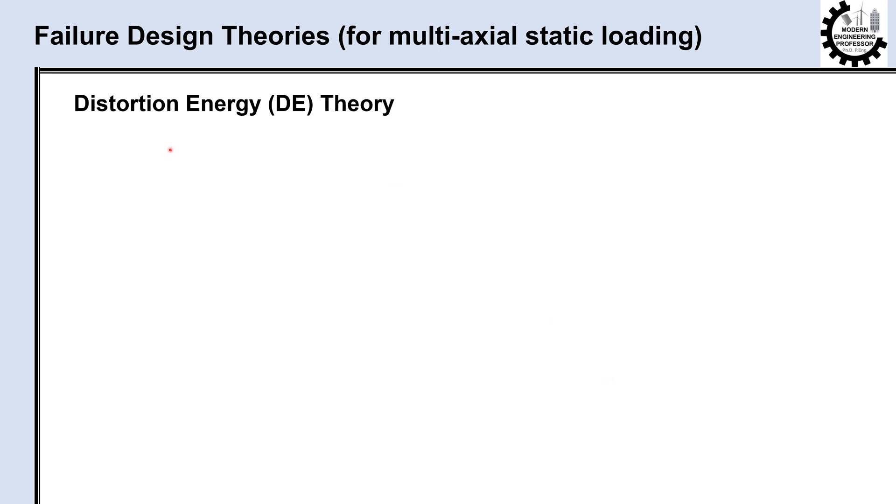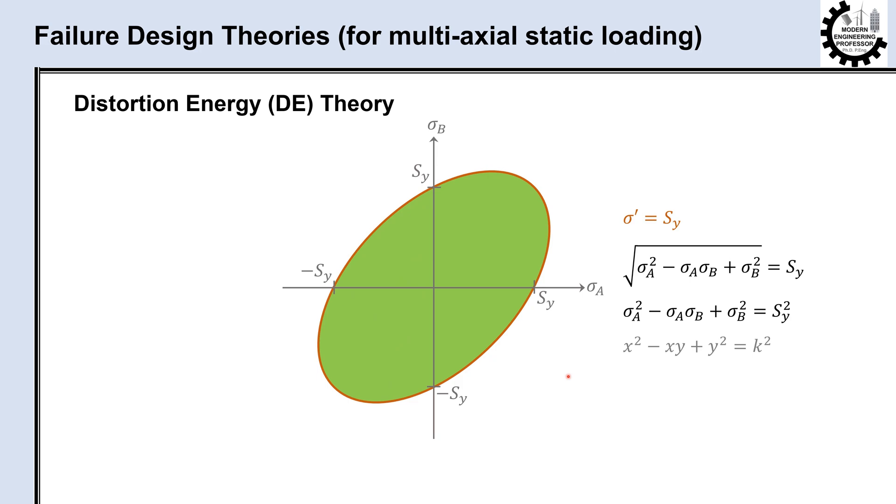Let's visualize the safe and failure zones for the distortion energy theory. We start by drawing sigma A and sigma B on a set of axes and mark the material's yield strength. The failure equation in the distortion energy theory is sigma prime equals Sy, which is the equation of a rotated ellipse in the XY coordinate system. Inside the ellipse represents the safe, non-yielding region, while outside indicates yielding failure for ductile materials.